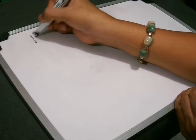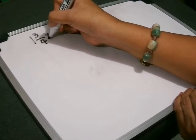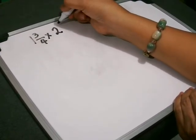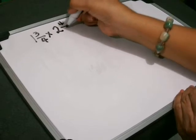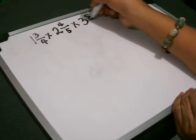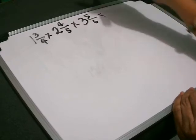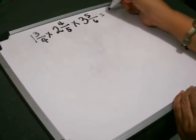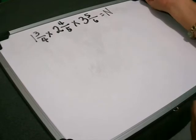I'm going to multiply 3 mixed numbers which are 1 and 3/4 times 2 and 4/5 times 3 and 5/6 equals unknown.